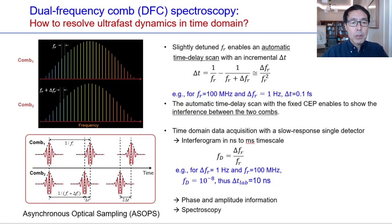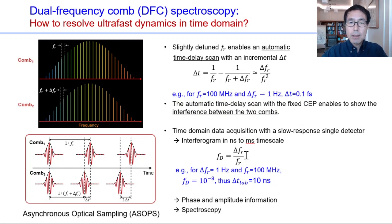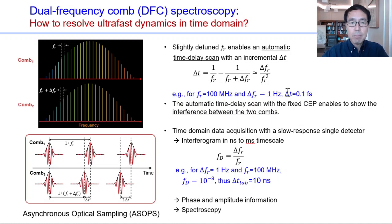Consider two frequency combs with slightly detuned repetition rates differing by ΔfR. The automatically generated time interval ΔT is given by a specific formula. For example, if the repetition frequency is 100 MHz and the detuning ΔfR is 1 Hz, the time interval ΔT becomes as short as 10 nanoseconds. The down-conversion factor is 10⁻⁸. Therefore, interference recorded on tens-of-nanosecond timescales in the lab frame provides information on sub-femtosecond relaxation processes of molecules in gas or condensed phases.